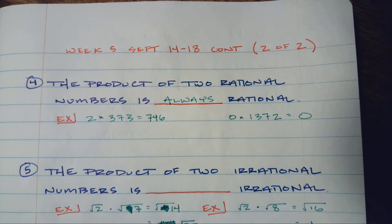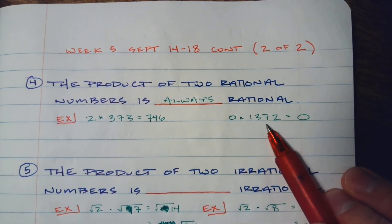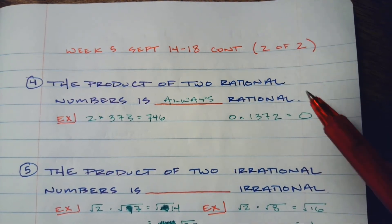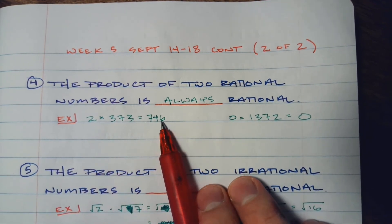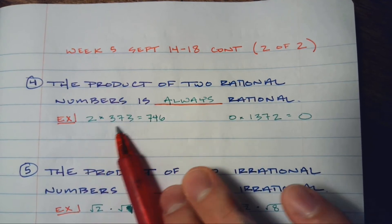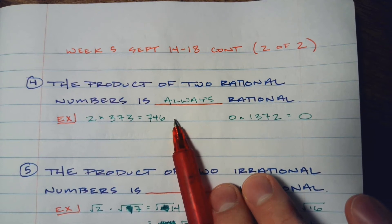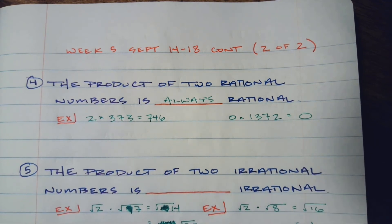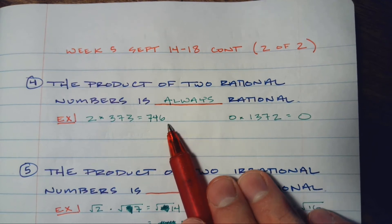Now let's take a look at multiplication. The product of two rational numbers is always rational. Zero is always a tricky number, but in this case it doesn't change anything — 0 times 1,372, both rational numbers, gives you 0, which is still a rational number. 2 times 373 equals 746. When you multiply two rational numbers, it's not suddenly going to go off into infinity with no discernible pattern.